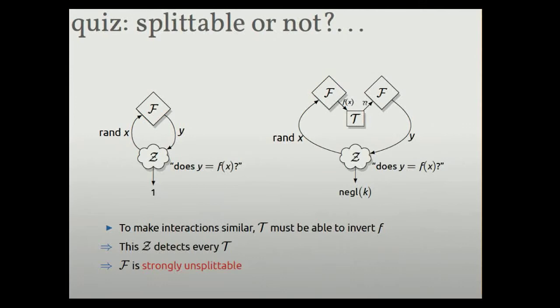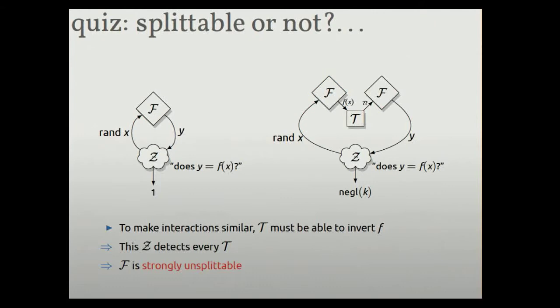So this is a winning strategy for Z that I described. On the left-hand side, he always says yes. On the right-hand side, he almost always says no. So a winning strategy for Z, that means F is strongly unsplittable. So we've reinforced our understanding of this concept, and this example will come back a little later.